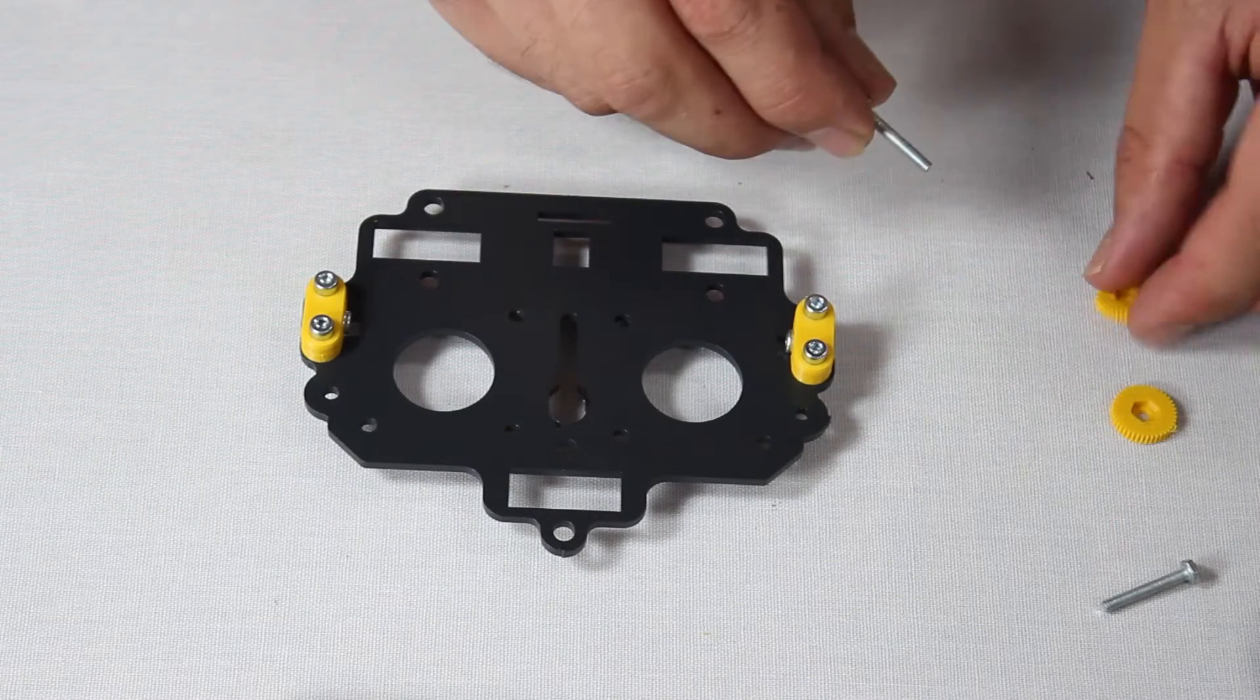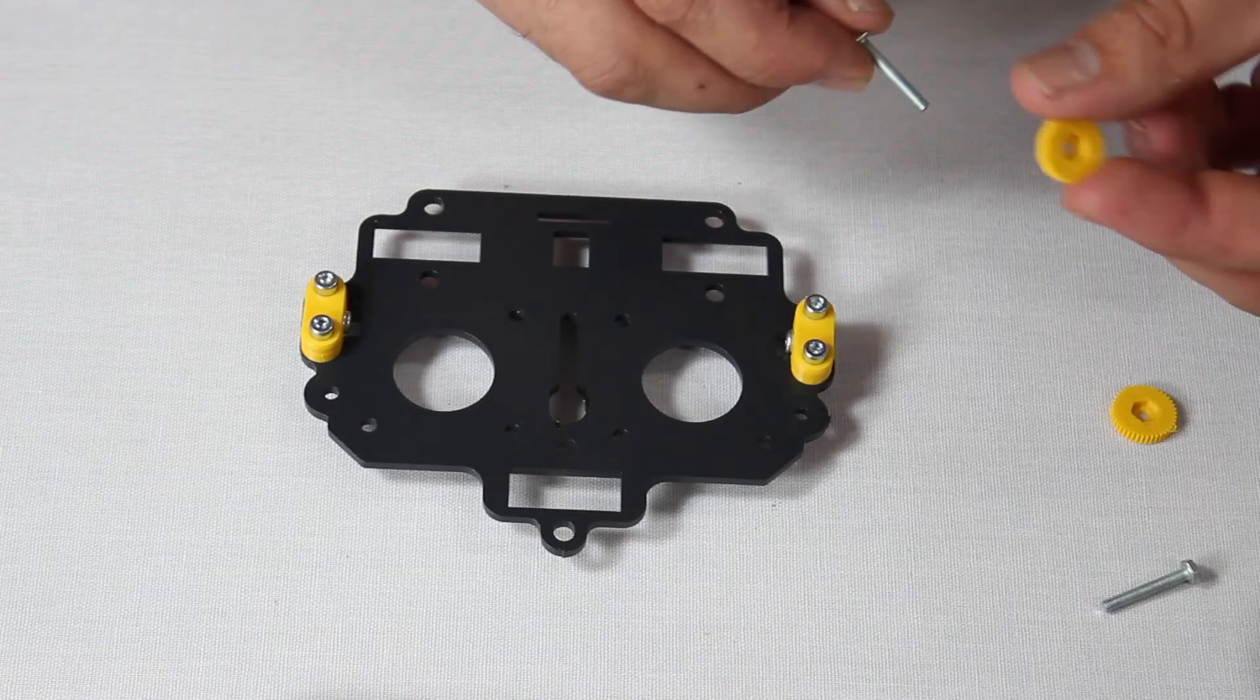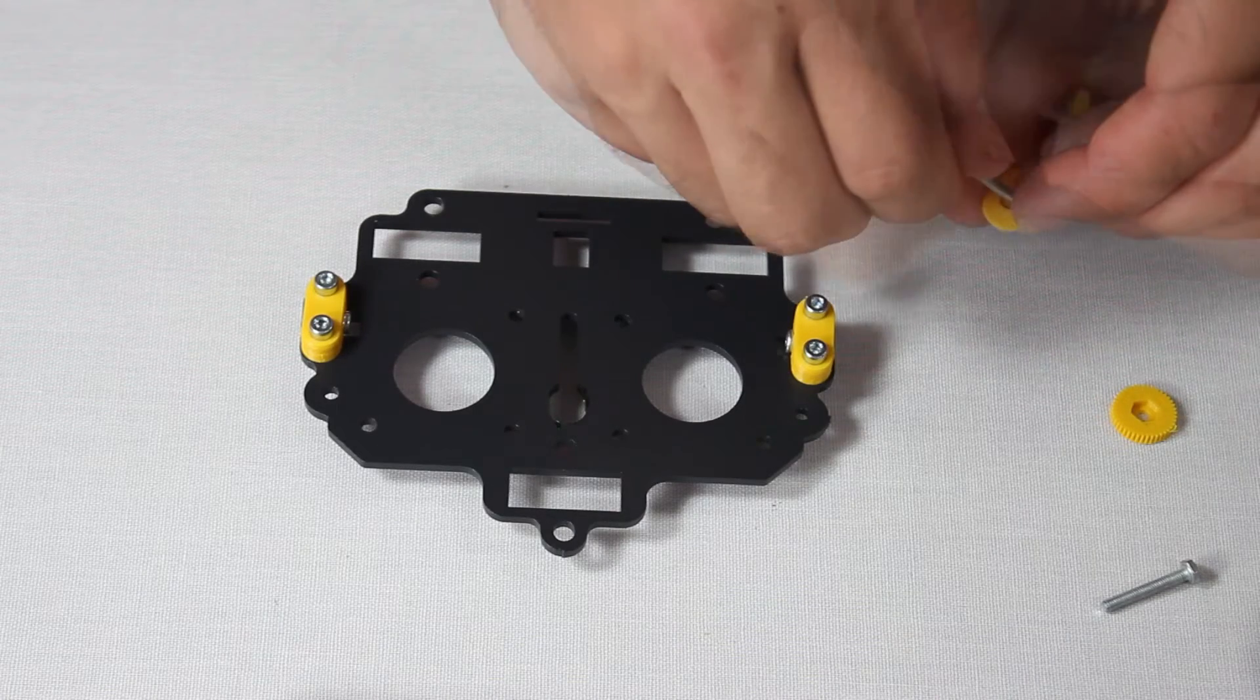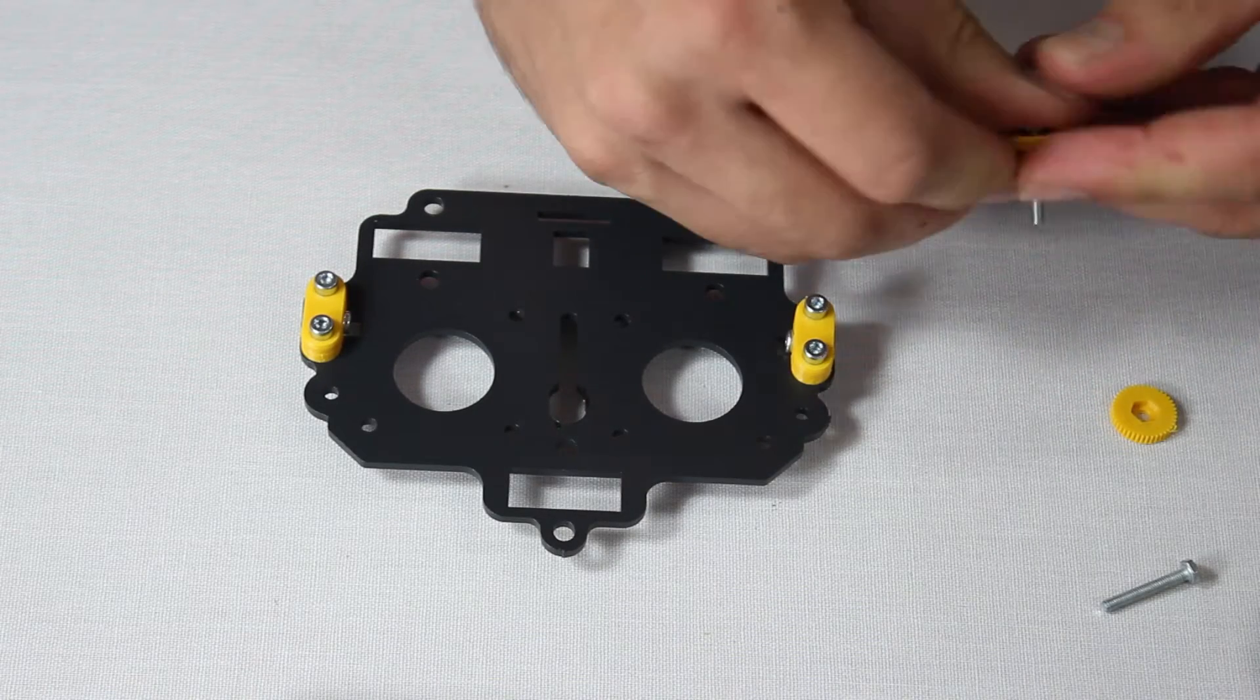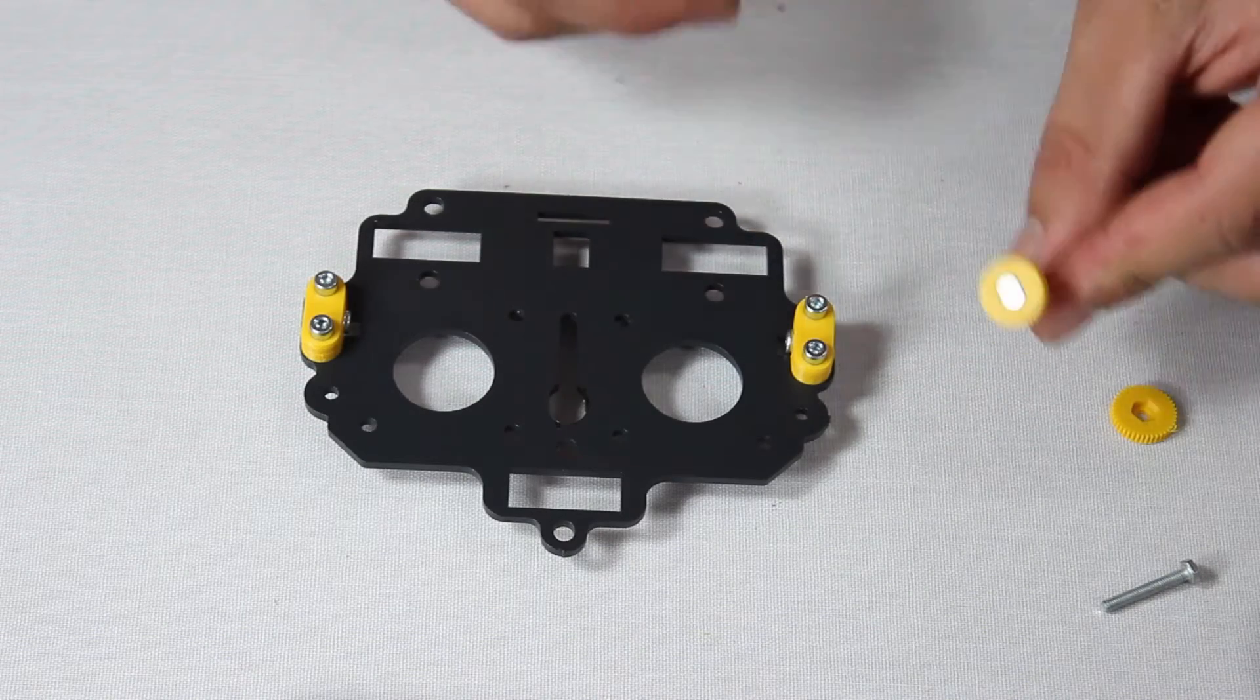Once you've done this, apply bolts to the printed cogs. Again, these have a predefined direction. The bolt heads must fit into the hexagon shaped recesses on the cog.